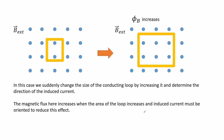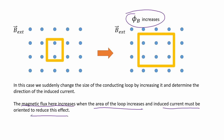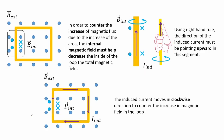In this case we suddenly increase the size of the conducting loop and determine the direction of the induced current. The magnetic flux increases when the area of the loop increases, and the induced current must be oriented to reduce this effect. In order to counter the increase of magnetic flux due to the increase of area, the internal magnetic field must help decrease the total magnetic field inside the loop. Using the right hand rule, the direction of induced current must be pointing upward in this segment. The induced current moves in a clockwise direction.